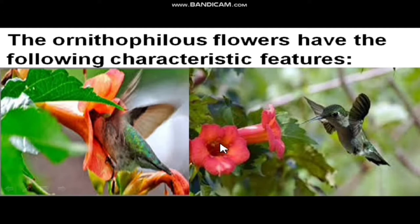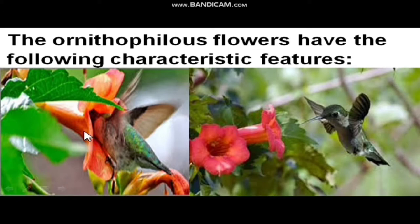The main motto of this flower is to transfer pollen grains from one flower to another. So in order to do that, when the bird puts its head inside, the pollen grain should be formed on the surface of the head. That's the important characteristic — the flower should be bigger in size and the corolla should have a cup-shape or bell-shape cavity.